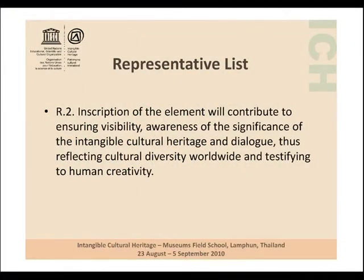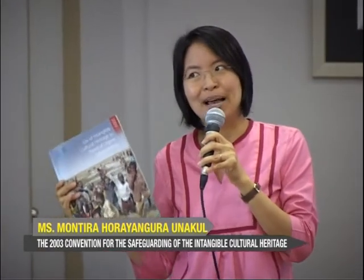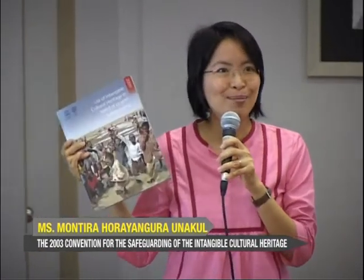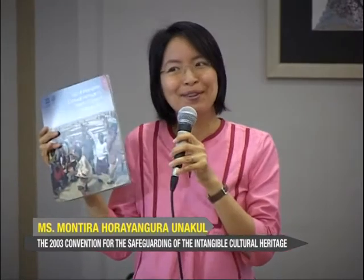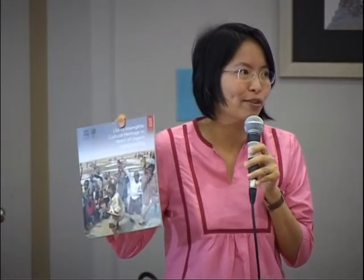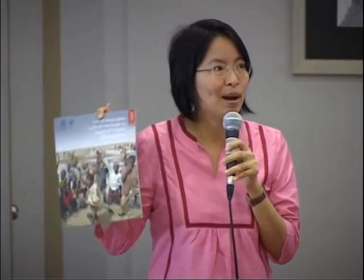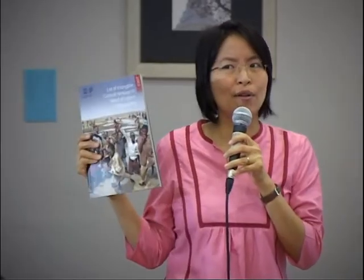Countries have been very enthusiastic about putting things on the representative list because they're sort of still in the beauty pageant mentality — they want more and more things to be on this list because it makes them feel special. But really that's not the point. The point is to try to spend much more time on the urgent safeguarding list, which is to say that the international community, through the framework of this convention, is poised to give attention to things which are quickly about to disappear.